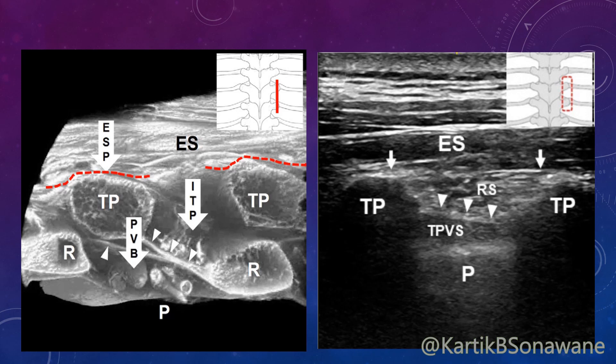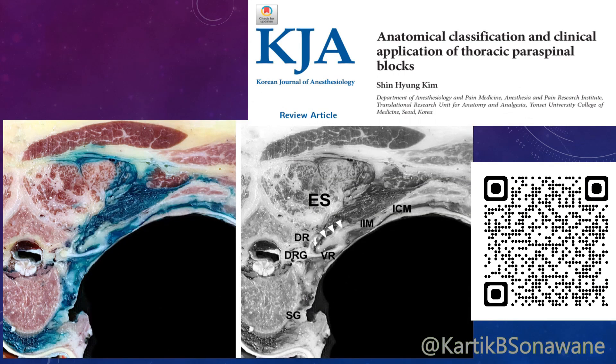Due to communication between the retro-superior costo-transverse ligament and the thoracic paravertebral space, anatomical studies consistently demonstrated paravertebral spread of dye injected into the ITP region along with sympathetic involvement. The dye spread multi-directionally from the injection point — the retro-superior costo-transverse ligament space — into the paravertebral space through the costo-transverse foramina, intercostal space, and erector spinae muscle compartments, involving dorsal rami, ventral rami of the spinal nerve, and the sympathetic ganglion.